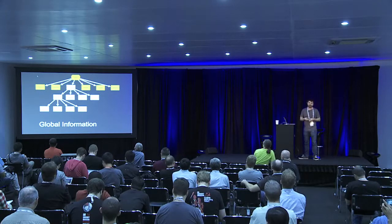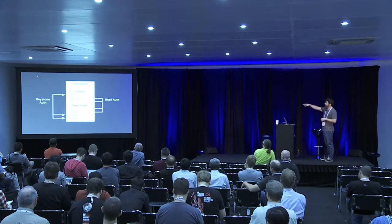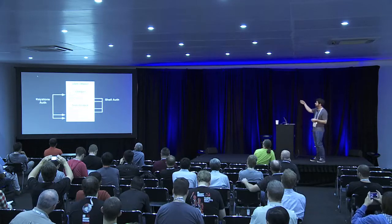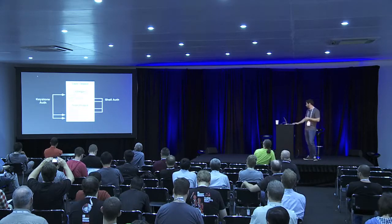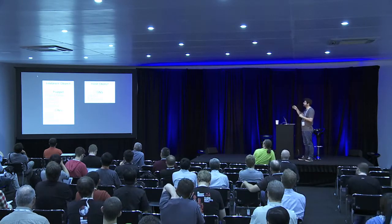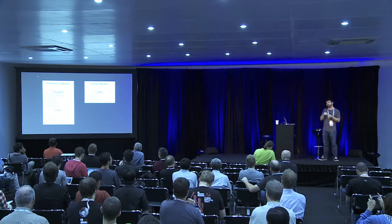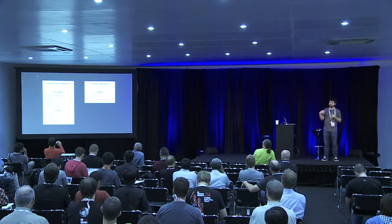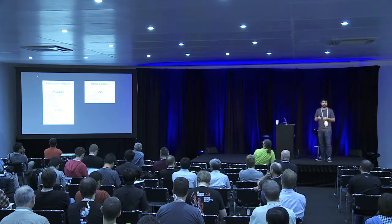The global sudoers information is so that we as the operations team have root on every single instance. Our user objects have information used for Keystone authentication and information used for shell authentication. The username, password, and email address are for Keystone. The UID name, the UID, the GID, and the SSH keys are for shell authentication. Instance objects and host objects are in the hosts OU. The instance object holds both DNS information and Puppet information for each instance. Then we have separate host objects for public IP and public DNS information. We're using PowerDNS with an LDAP backend for all of this information.